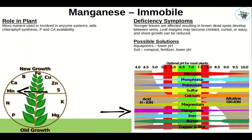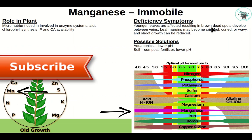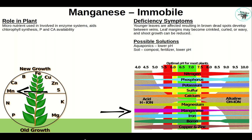Manganese is an immobile micronutrient used in enzyme systems; it aids in chlorophyll, potassium, and calcium availability. There is a separate video on how these nutrients interact with each other. Deficiency symptoms: younger leaves are affected, resulting in brown dead spots and development between the leaves; leaf margins become crinkled, curled, and wavy; shoot growth can be reduced. In aquaponics: lower the pH. In soil: compost, fertilizer, and lower the pH. Manganese becomes less available as pH rises.